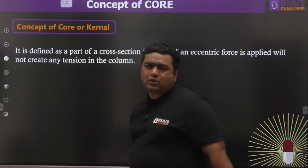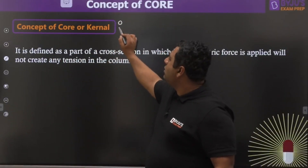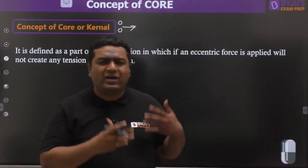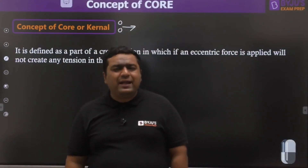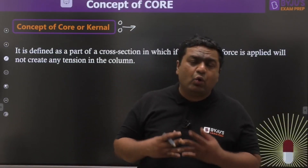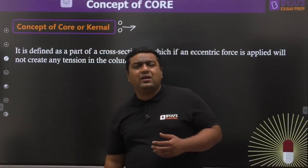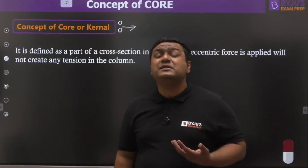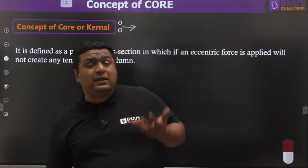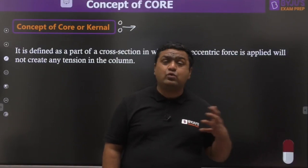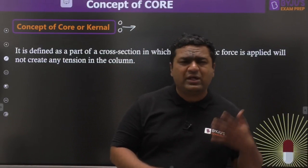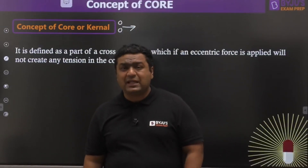The topic is concept of core or kernel. Whenever we are talking about core or kernel — what is it actually? Whenever we are talking about columns, if loading is applied in an eccentric way, meaning if the load is not passing through the CG or centroid, then it creates a couple which will result in some tensile stresses. Columns are generally made up of brittle materials like concrete.